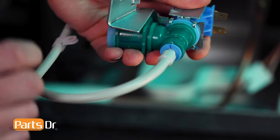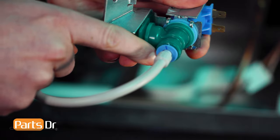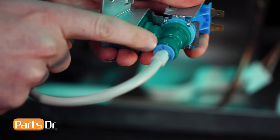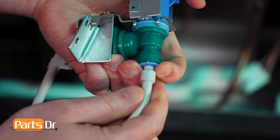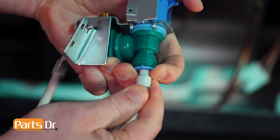Disconnect the water line from the valve by depressing the blue collar with your fingers while pulling on the line. Make sure the collar is depressed evenly all the way around. You may want a towel handy as it will leak some water.